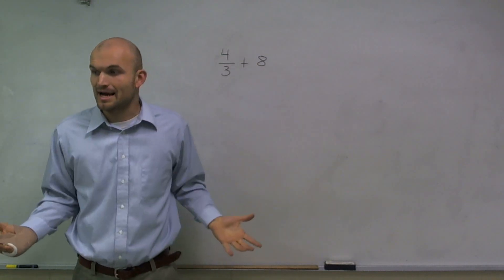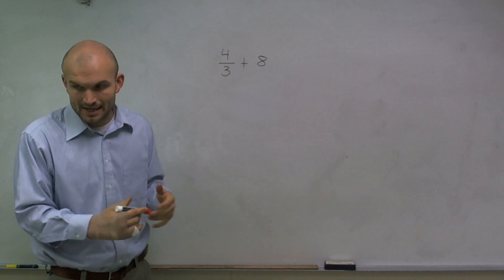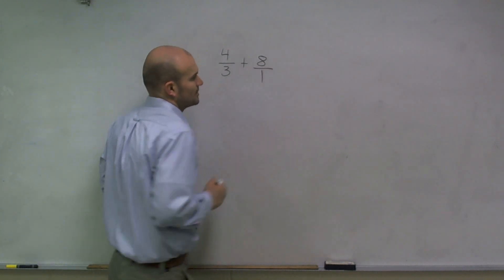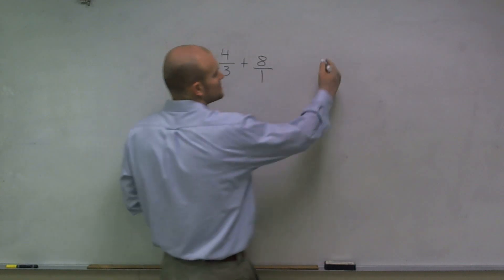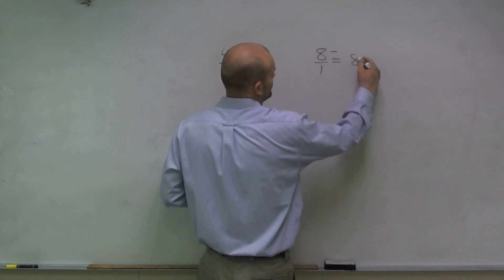So this 8 does not have a denominator here. And so what I need to do is I need to say, how can I write my 8 as a whole number with a denominator? Well, a little magic trick that we can do is put it over 1, because we know that 8 over 1 is equivalent to 8.